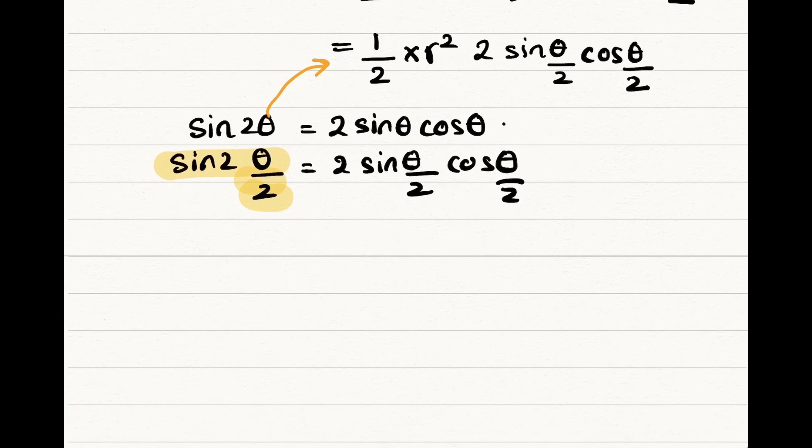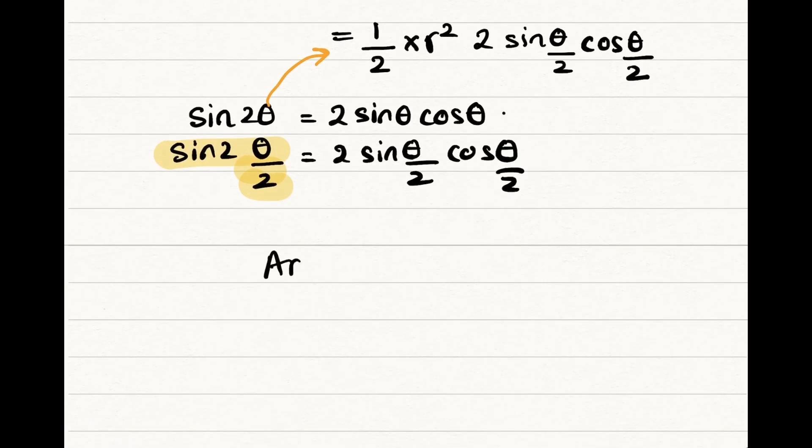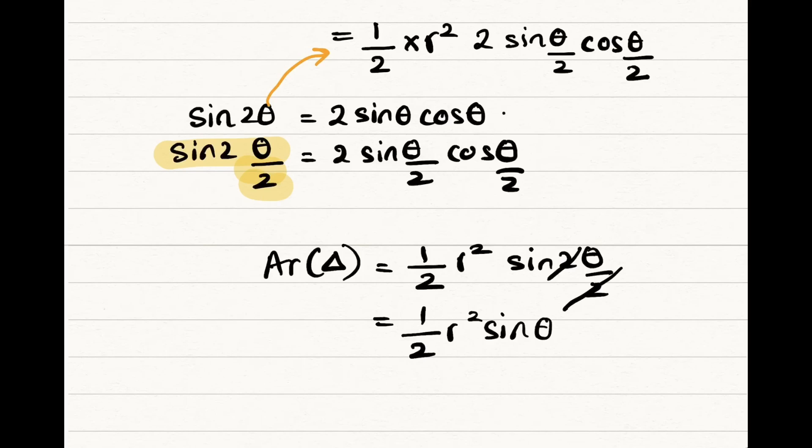We get it as area of the triangle is equal to half r square sine 2 theta by 2. Two and two got cancelled so half r square sine theta is the area of the triangle and we are done with our proof.